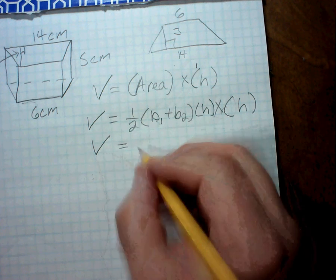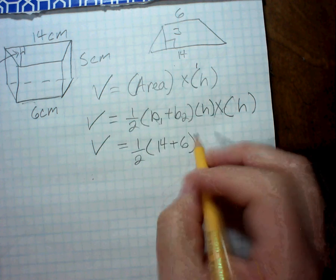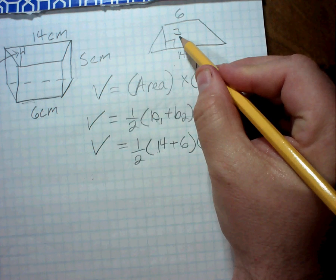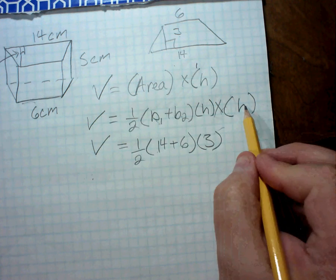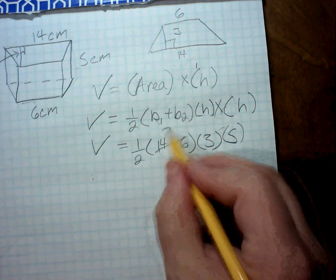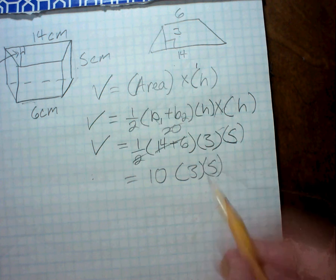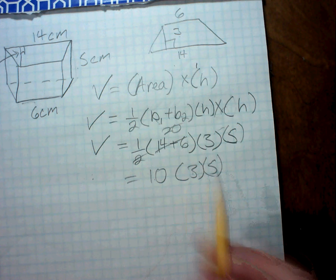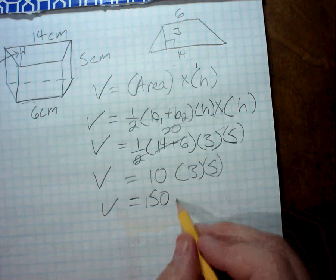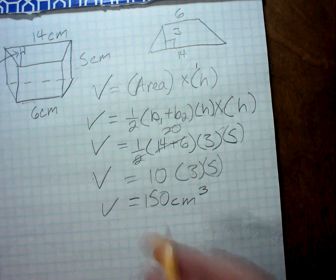So the volume of this is equal to 1 half times 14 plus 6 times the height of the trapezoid, which is 3, times the height of the prism, which is 5. This adds up to 20. 1 half of 20 is 10 times 3 times 5. 10 times 3 is 30. 30 times 5 is 150. It's a volume, which is 3 dimensions, which is going to be centimeters cubed. And that's it for example number one.